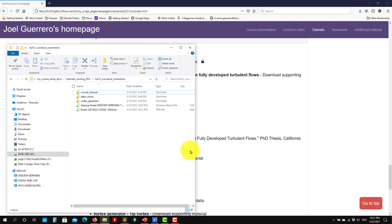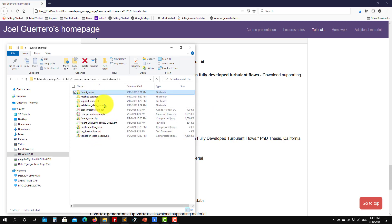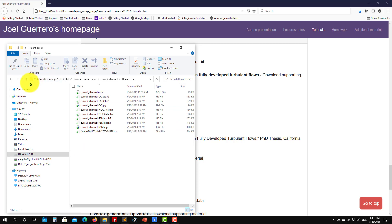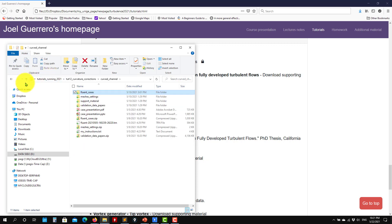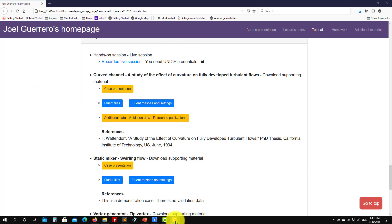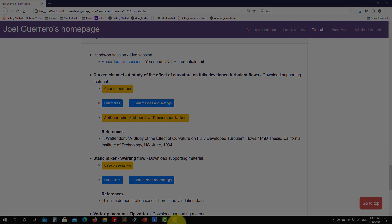And remember, when you download the cases, you're going to have the curved channel. The influence cases, you have different cases there. This is a very inexpensive case. You have meshes and validation data and papers. So that's all for the moment. See you next video. Bye.